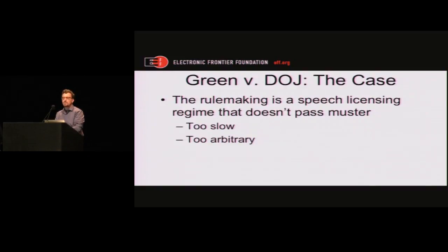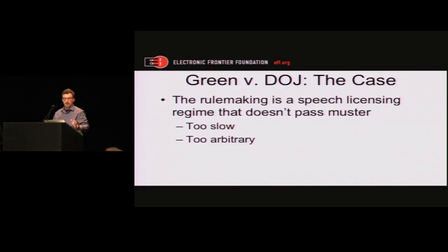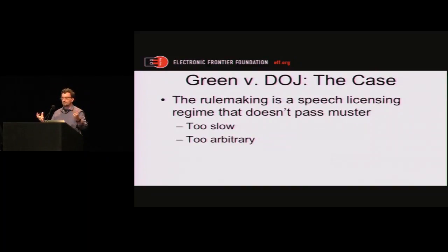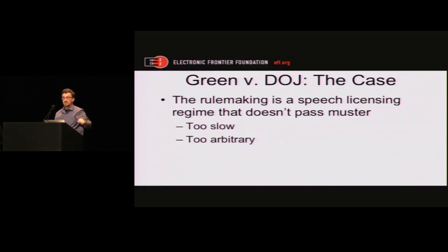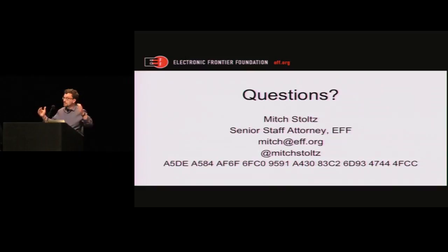The three-year exemption process is a speech licensing regime. Think of it like permits for demonstrations or street marches. What the First Amendment says — and what courts have said — is that these licensing processes have to be fast and based on very specific criteria so government officials can't use them arbitrarily. This three-year process is neither of those things. Research that someone wants to do now, papers that people want to give — it's no comfort to say you can apply for an exemption in 2018 to be able to do this. The criteria for getting those exemptions is a bit arbitrary, and the Copyright Office tends to move the goalposts on these things.